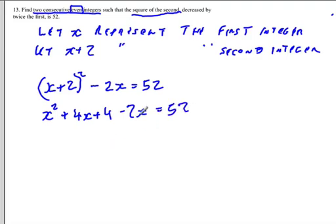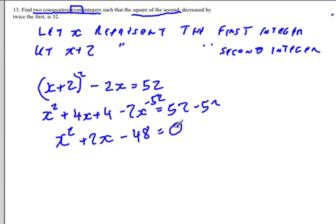Equals 52. We simplify, so we're going to subtract 2x from 4x, and we're going to subtract 52 from both sides, and this becomes x squared plus 2x plus 4 minus 52 would be negative 48, is equal to 0.